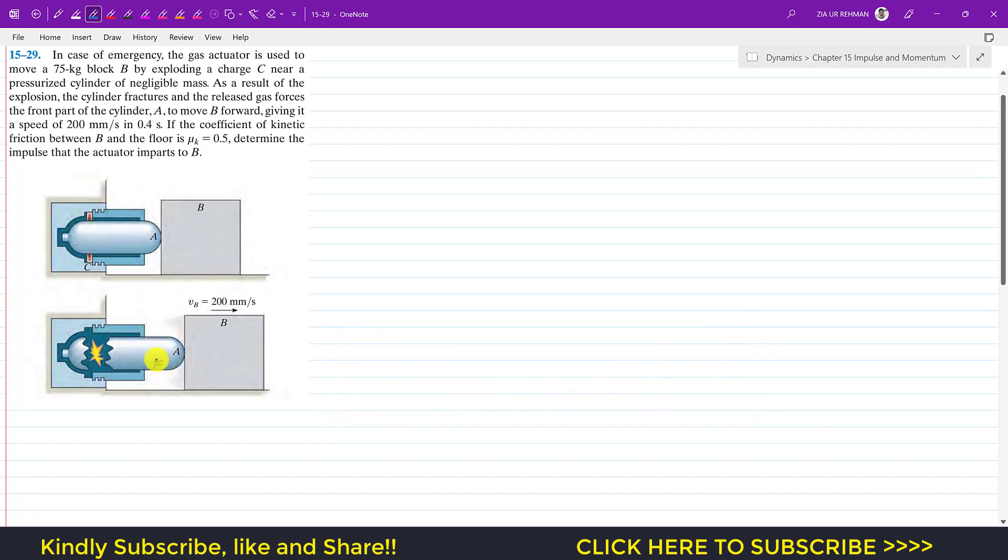Now we are going to solve this problem which says that in case of emergency, the gas actuator is used to move a 75 kg block B by exploding a charge C.